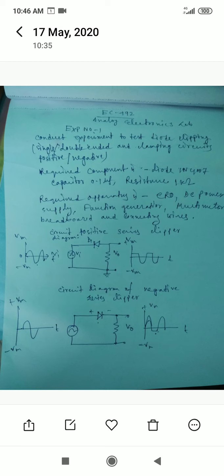To do the experiment, we require Component Diode IN4007, Capacitor 0.1 microfarad, resistance 1 kilo ohms. And Apparatus will be required: CRO, DC power supply, Function generator, Multimeter, Breadboard and Connecting Wires.